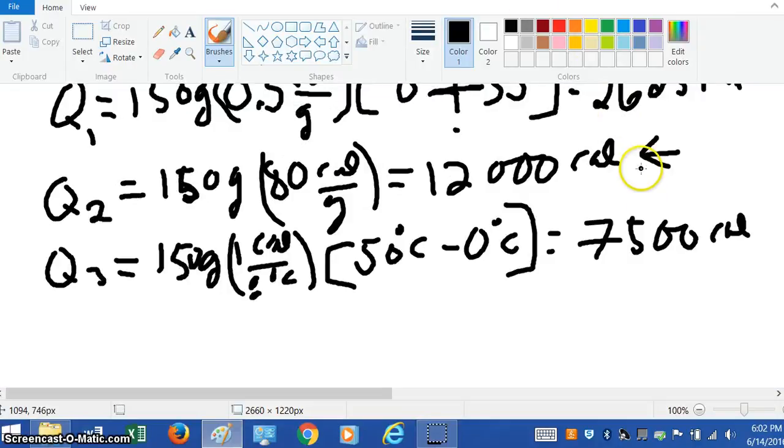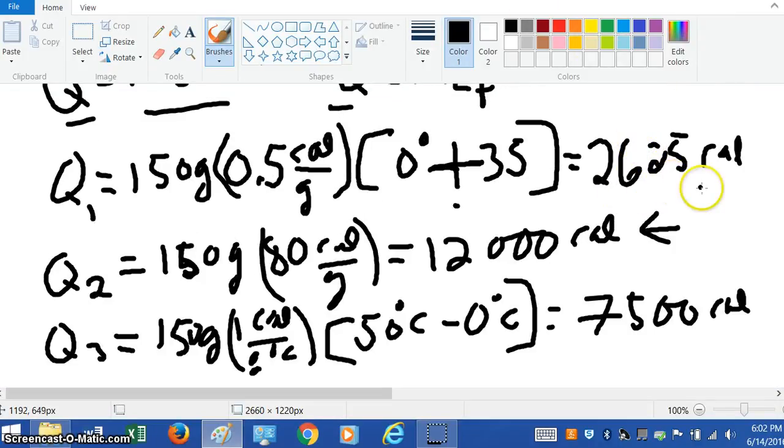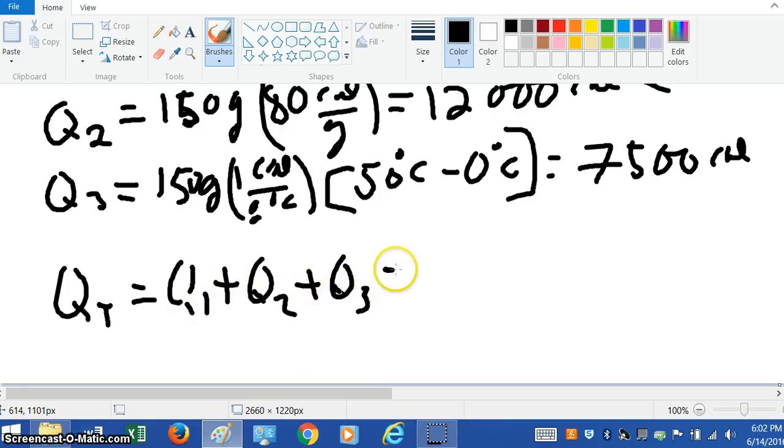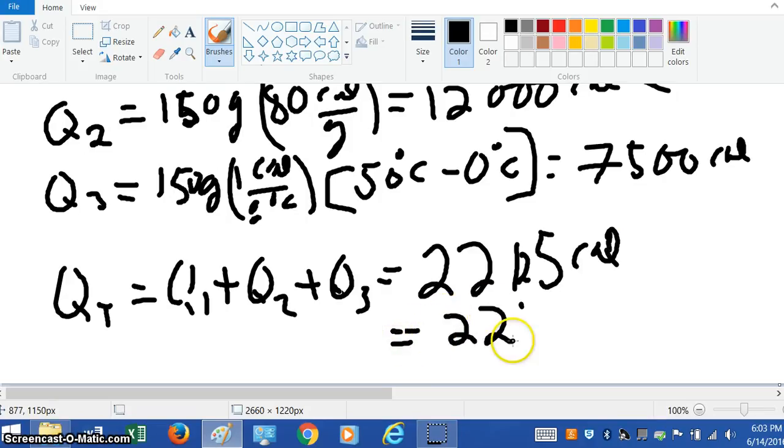Let's complete this. When you do this third step, you get 7,500 calories. We're going to add that to the 12,000 calories, and then also add that to the 2,625 calories, which was required to melt the ice. So this phase changes the ice, and this one raises the temperature of the now liquid water from zero to 50. The total energy to do this is going to be Q1 plus Q2 plus Q3. When we add it up, I get 22,125 calories.